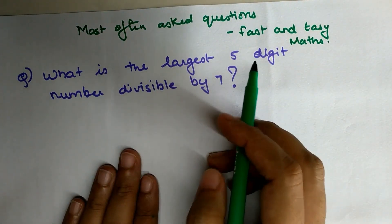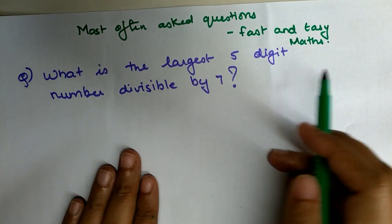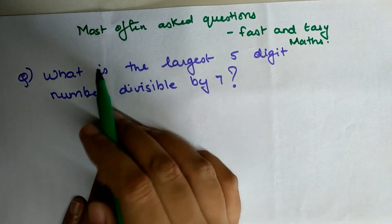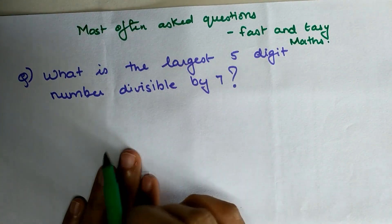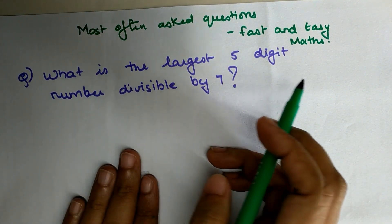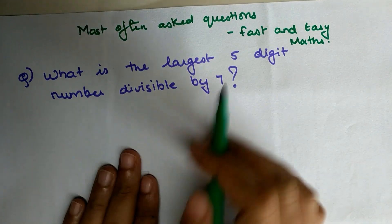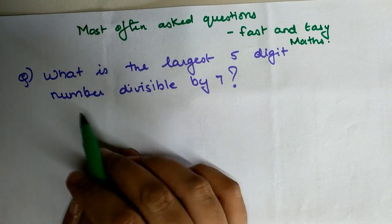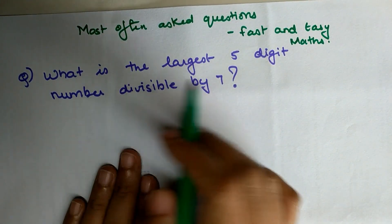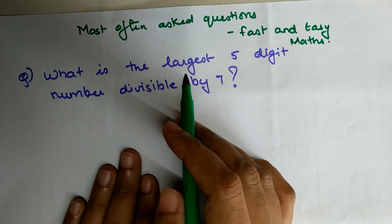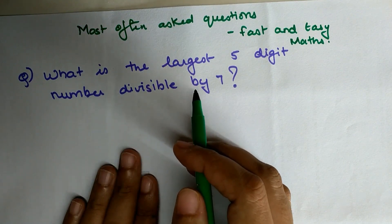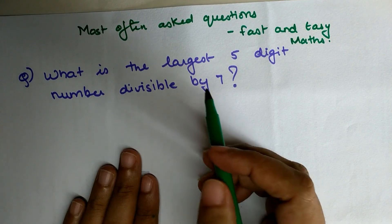Welcome everyone to my channel, Fast and Easy Maths, which is dedicated to giving you tips and tricks related to mathematics. Today we are going to solve the most often asked kind of questions in entrance exams. Let's talk about the first question: what is the largest five-digit number divisible by seven? Before beginning, I'm going to give you a similar question at the end of this video for you to solve in the comments section.